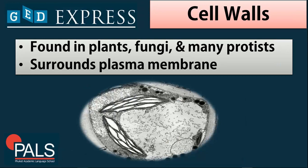Next is the cell wall. The cell wall can only be found in plants, fungi, and many protists, but not in animal cells. It surrounds the plasma membrane for additional protection. In that photo, the rigid part is what we call the cell wall.